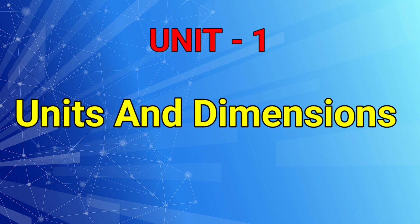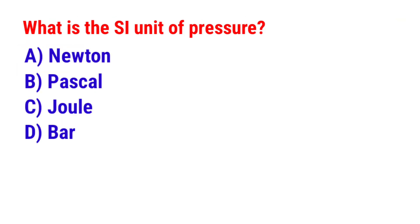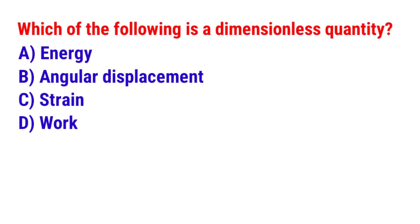Unit number 1: Units and Dimensions. Question 1: Which of the following is not a fundamental quantity? The answer is option D — Velocity. Next question: What is the SI unit of pressure? The answer is option B — Pascal. Next question: Which of the following is a dimensionless quantity? The answer is option C — Strain.